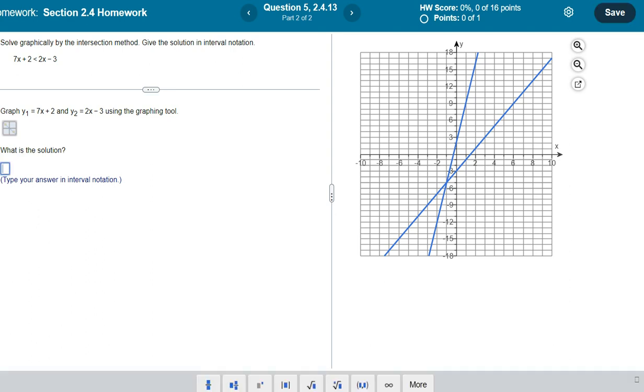So I have to look at the original problem. We are wanting to know where the 7x plus 2 is less than, which means below, the 2x minus 3. And when I look at this graph...